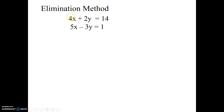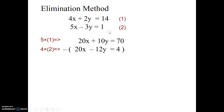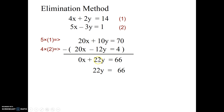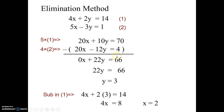One more elimination example. Again I can't add or subtract directly, so I multiply each equation by something. I multiply equation one by 5 and equation two by 4, giving 20x plus 10y equals 70 and 20x minus 12y equals 4. Subtracting eliminates the x's. Alternatively I could multiply equation one by 3 and equation two by 2 so the y terms cancel — either way works. Solving gives y equals 3, then substituting back gives x.